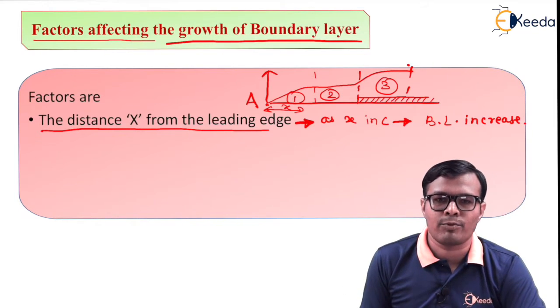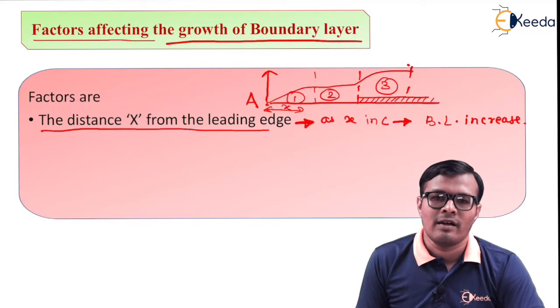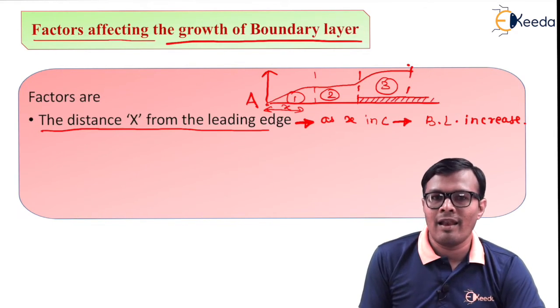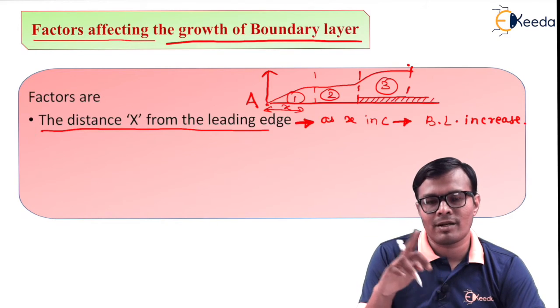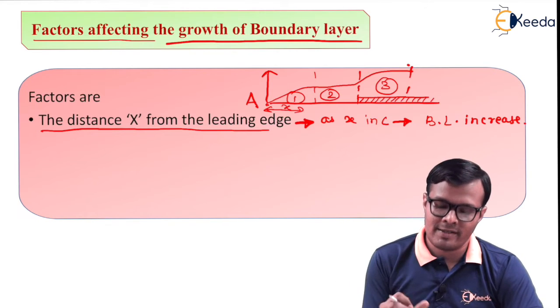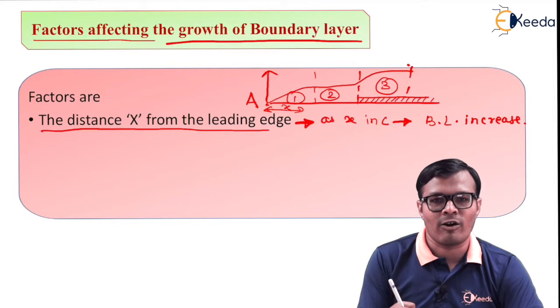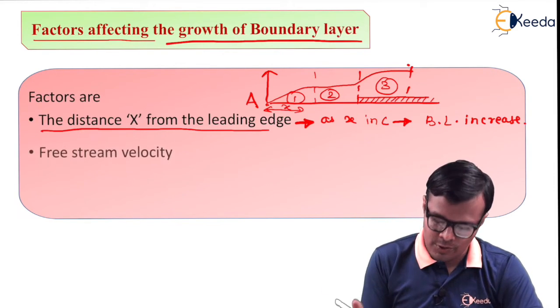In Reynolds number formula, Re equals rho v l upon mu. Reynolds number is directly proportional with l, that is the length which should be considered is nothing but x. So as x increases, Reynolds number increases, hence boundary layer also increases.